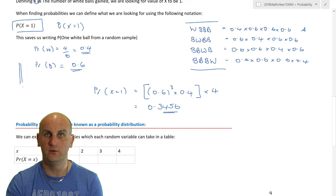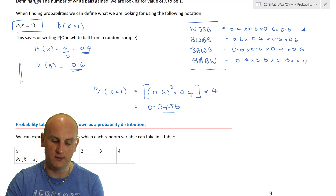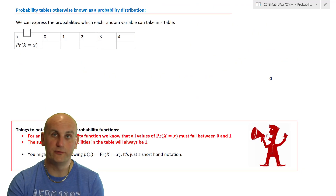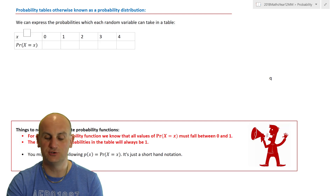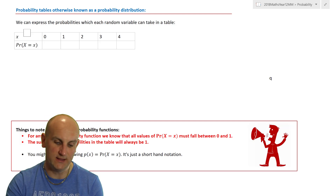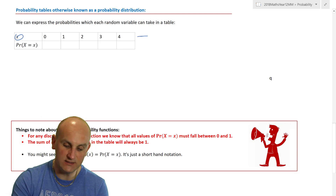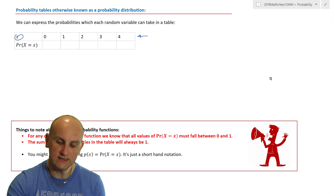Now probability tables are awesome when we put all this information together for discrete random variables. The table and all the information you have is called a probability distribution — please remember that. We can express each of those individual probabilities in a table. The top row has the numbers zero, one, two, three, and four, because we are counting how many white balls are possible when selecting four from the bag.